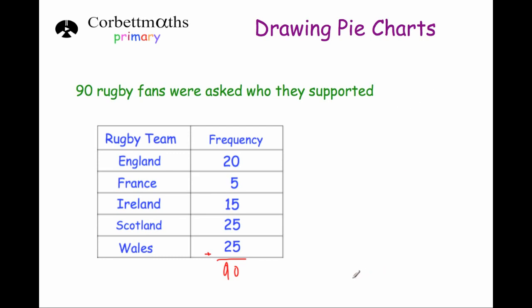Next, take 360 degrees — that's the degrees in a full circle or the pie chart — and divide that by your answer, divide it by how many people there are in total. So 360 divided by 90 equals 4. That means each person is worth 4 degrees, or gets 4 degrees of the pie chart.